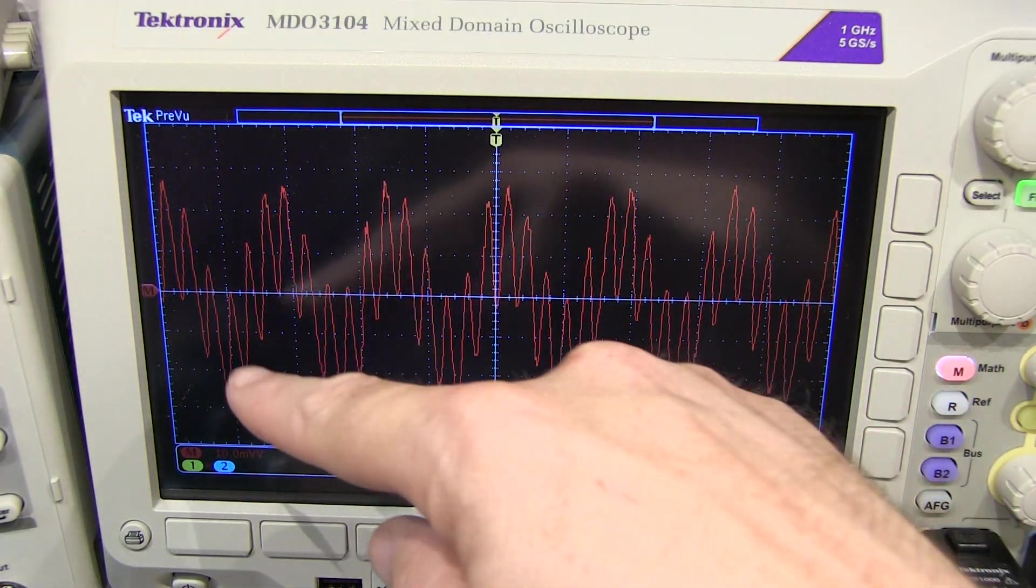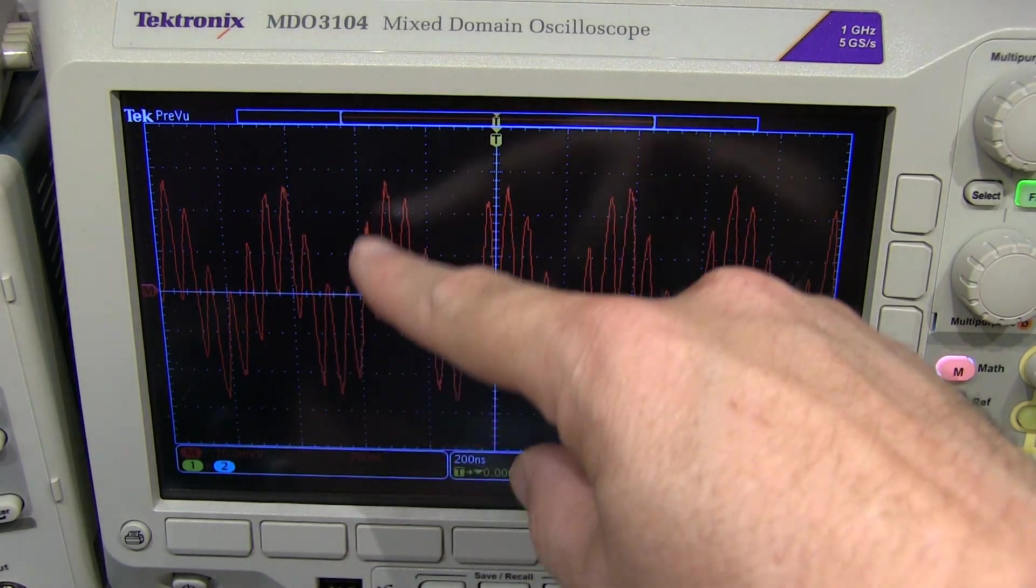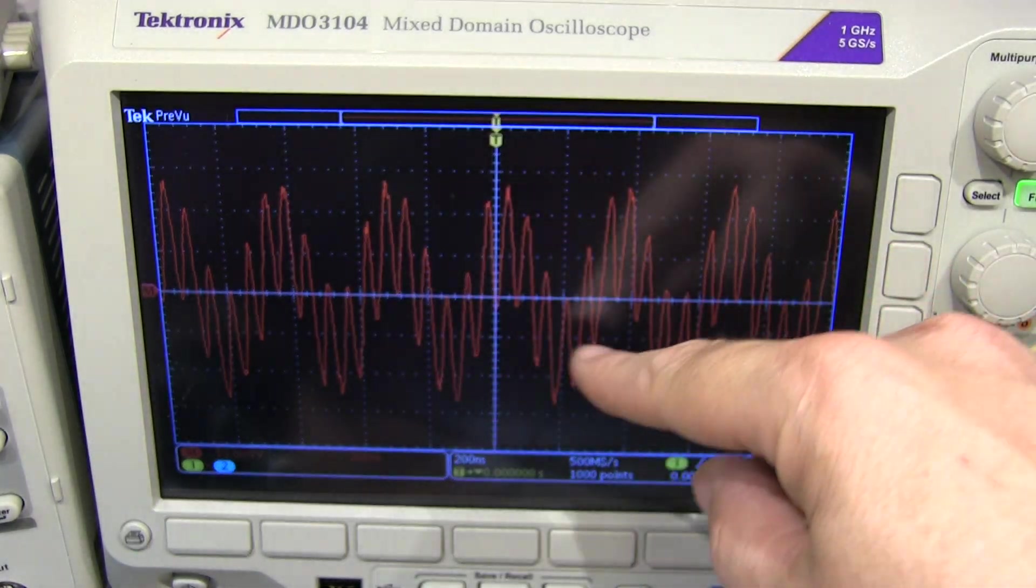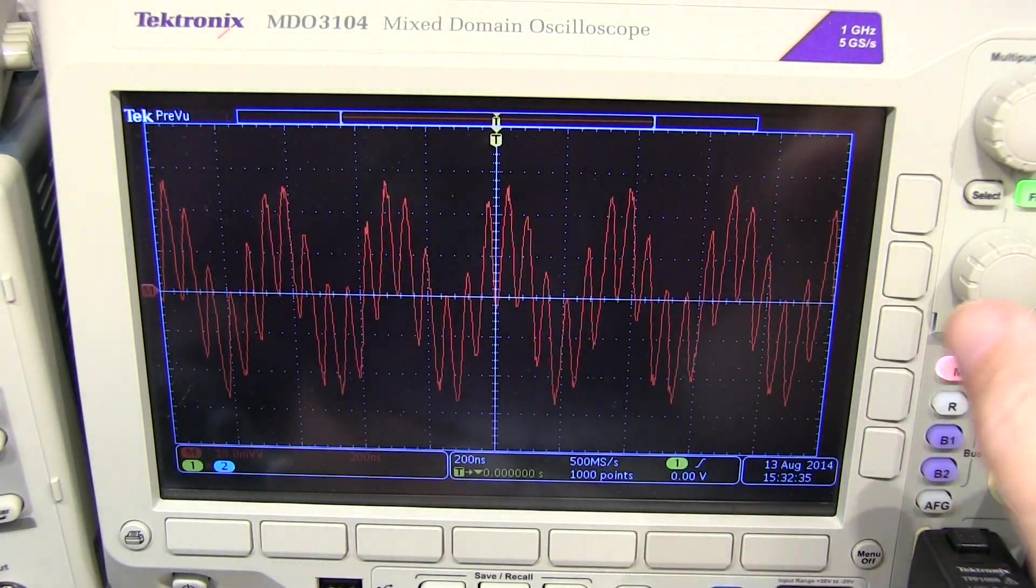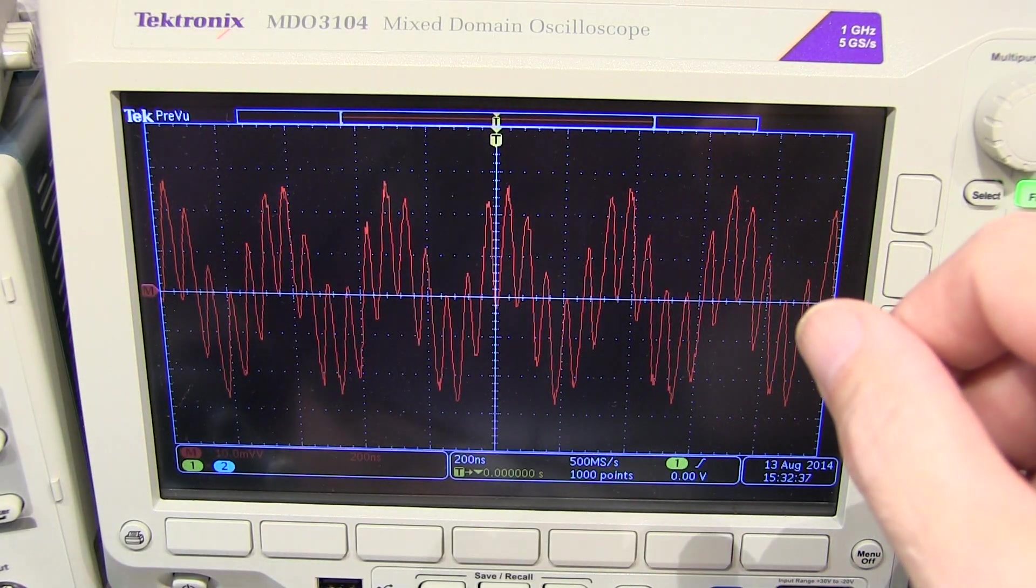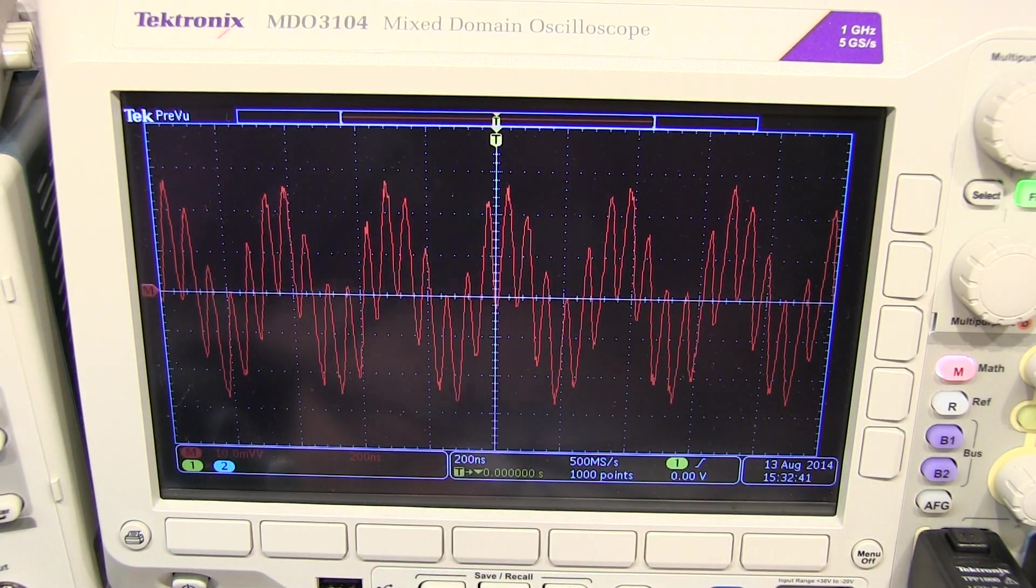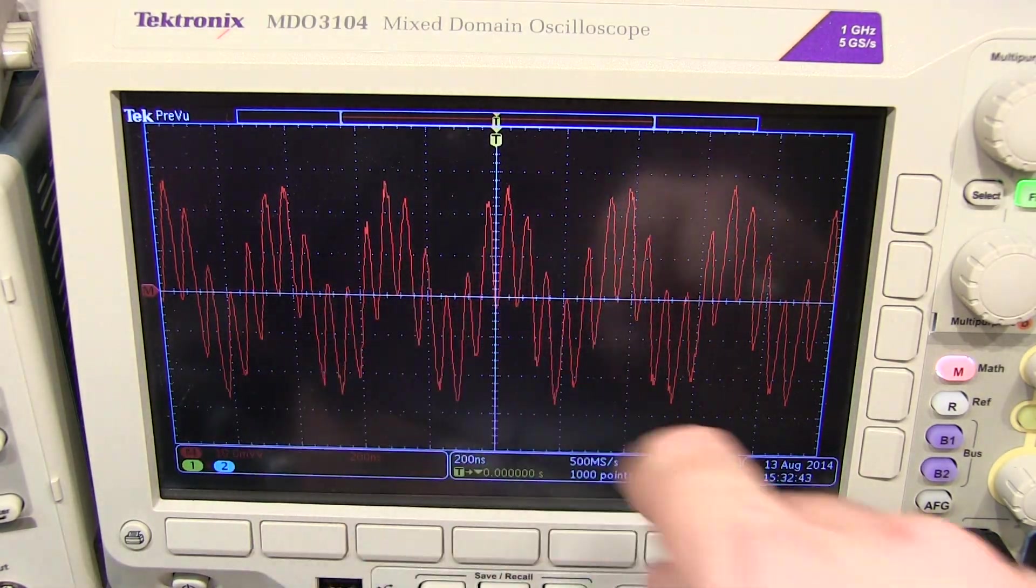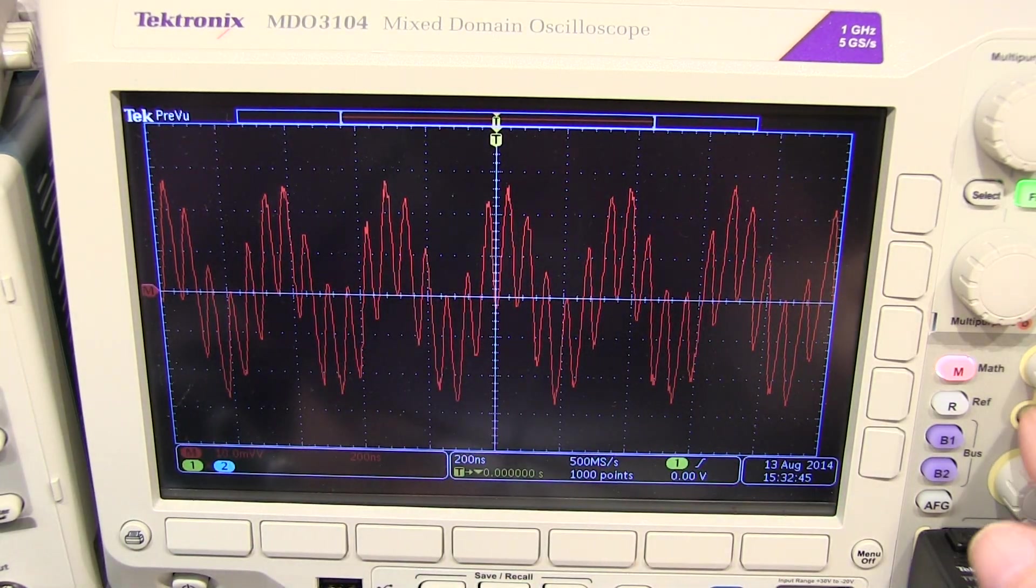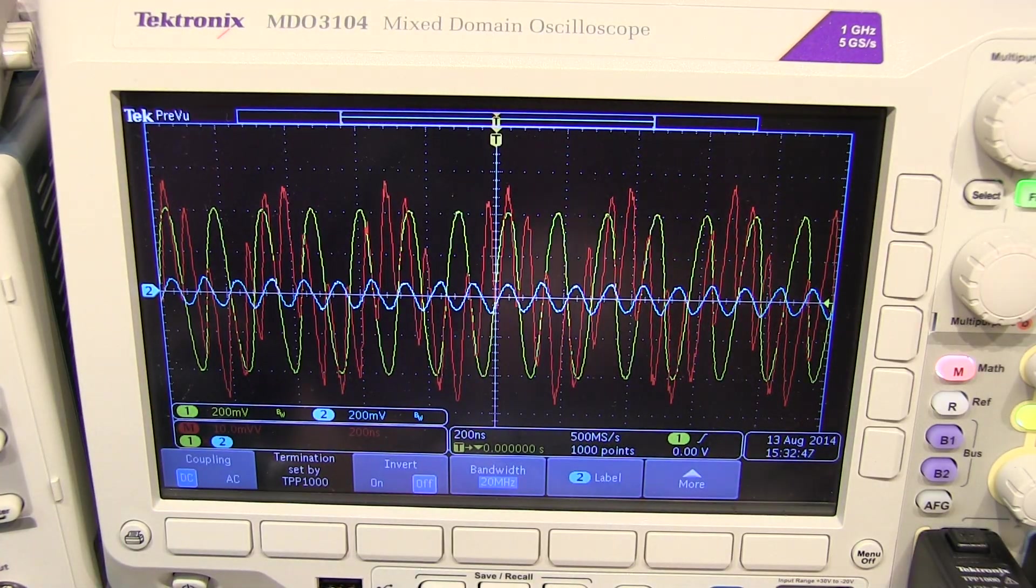And we can also see the higher frequency wiggles on this thing that are riding up and down on that low frequency. And that's our sum frequency. That's the 7 megahertz plus the 10 megahertz or the 17 megahertz signal. So you can visually see how multiplying those two sine waves together gives us components at the sum and difference frequency.